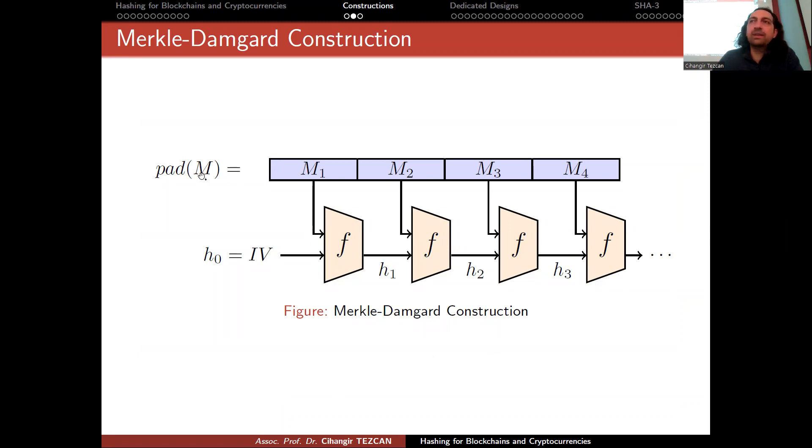Here's a picture of the Merkle-Damgård construction. You have the message M, you apply a padding to it. Generally the padding is that you fill empty places of the block with a single one and following many zeros until it is filled. You divide it into blocks; the block size is determined by the hash function design.